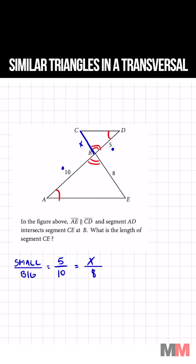Cross multiply and solve I get 40 equals 10X. Divide by 10 and I get my X which equals 4.